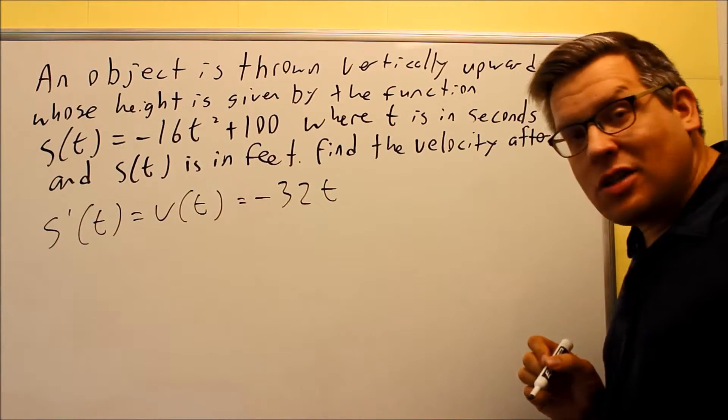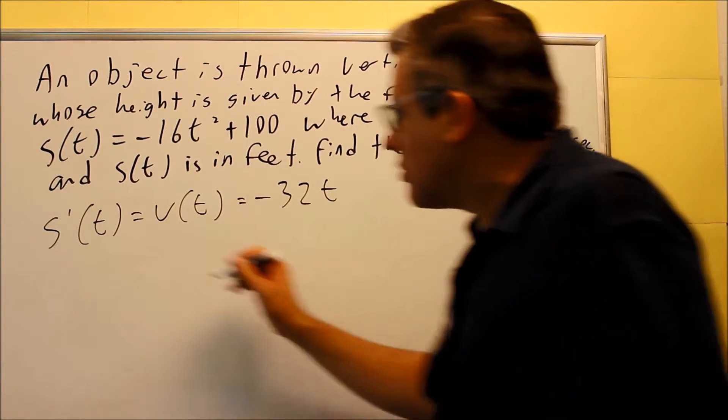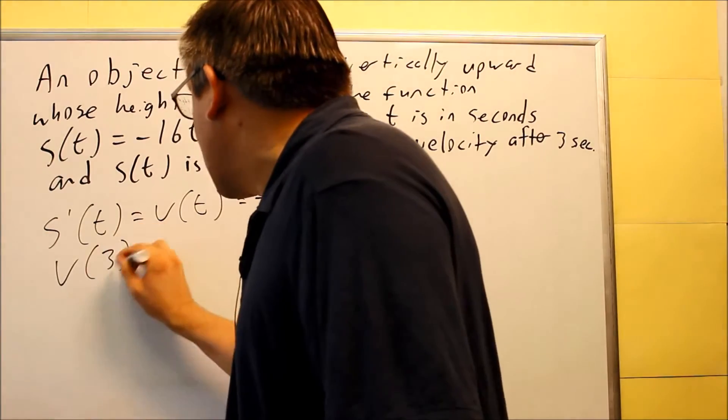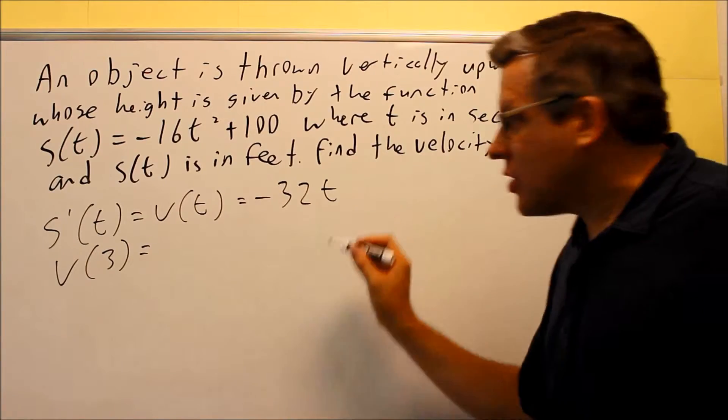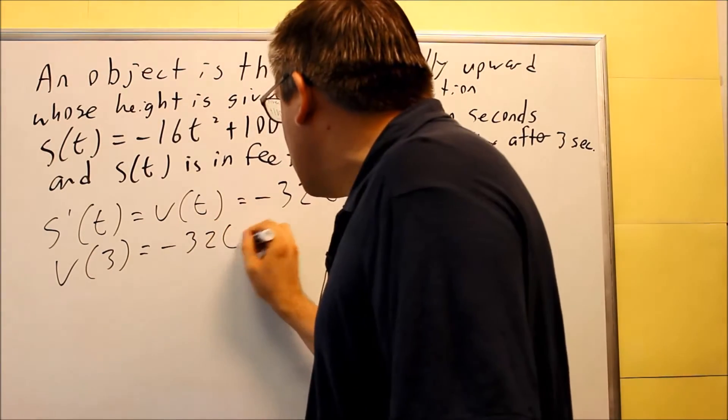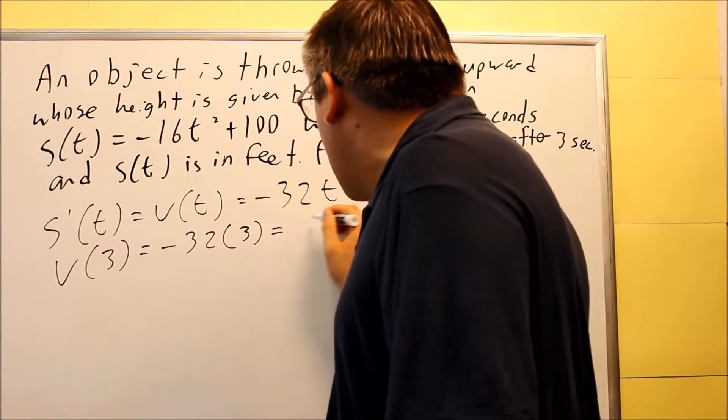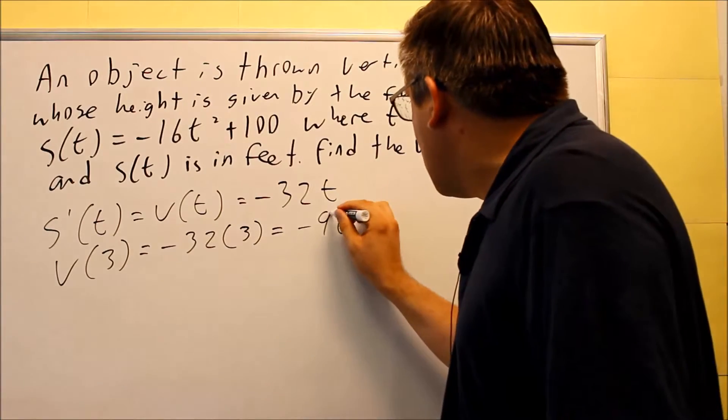They want you to find the velocity after 3 seconds. So it's asking us to do this. They want you to find V(3). So we're just going to put 3 in here in place of t. You get negative 32 times 3, and you get negative 96.